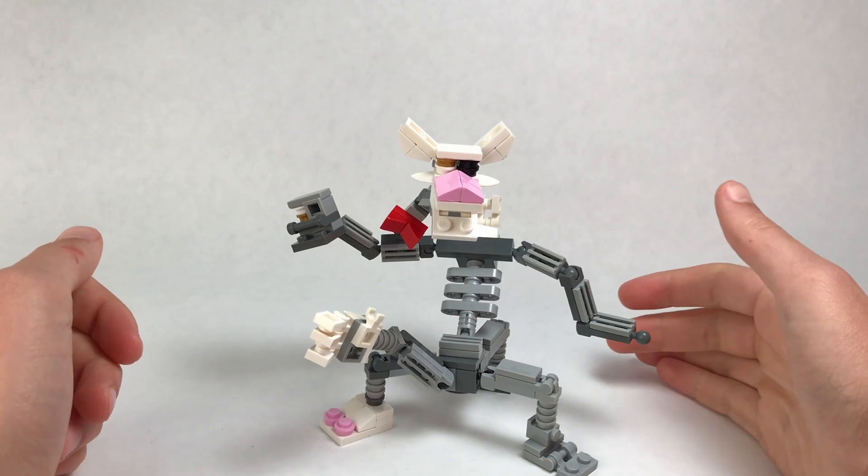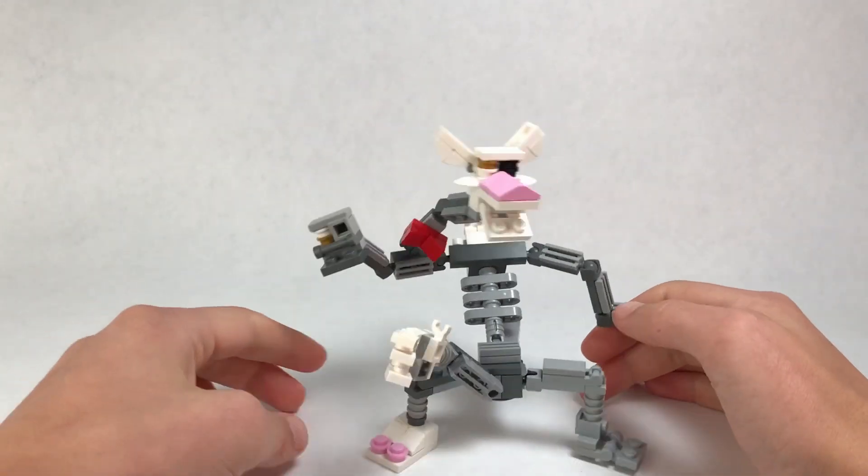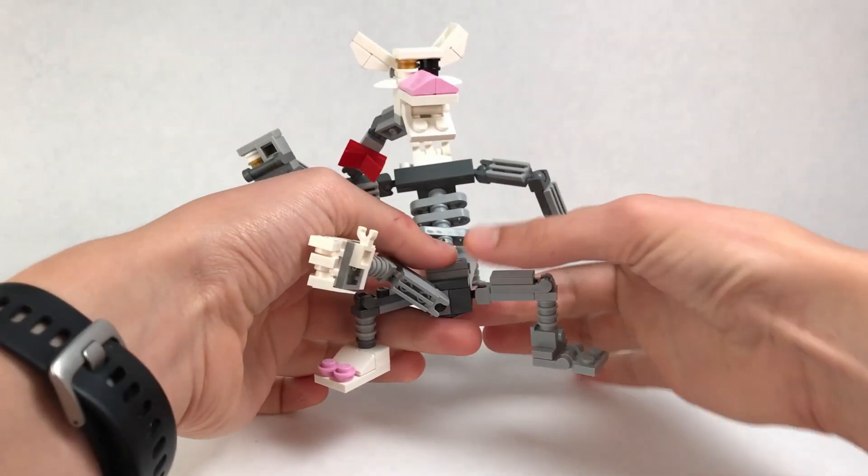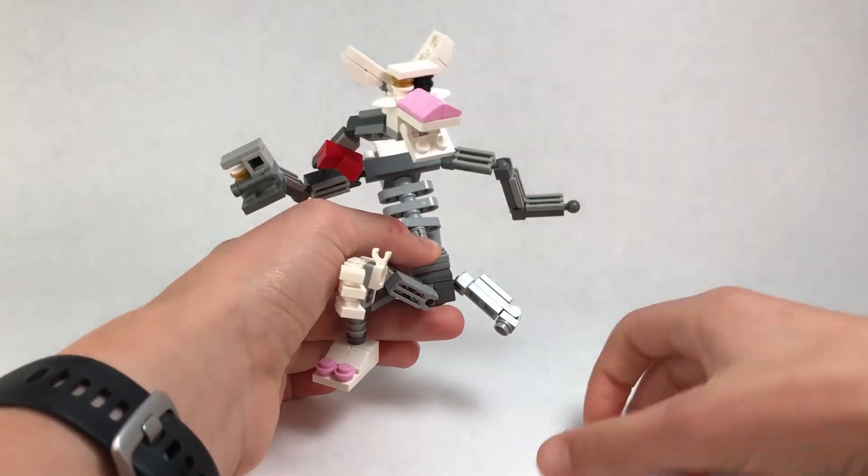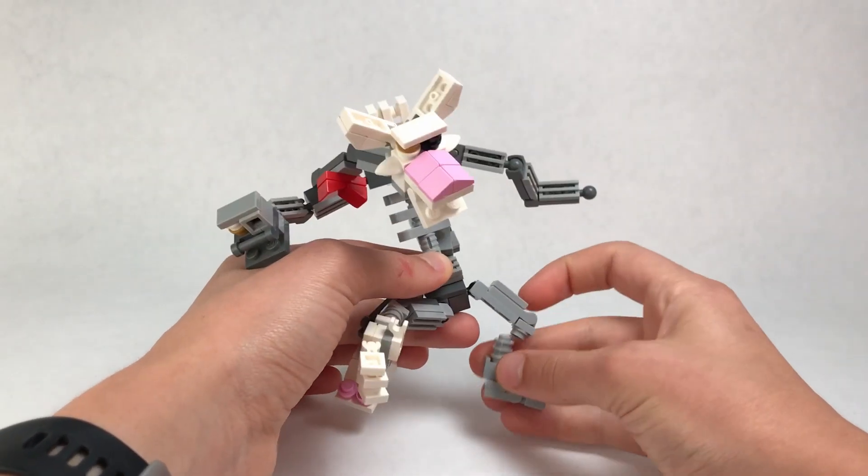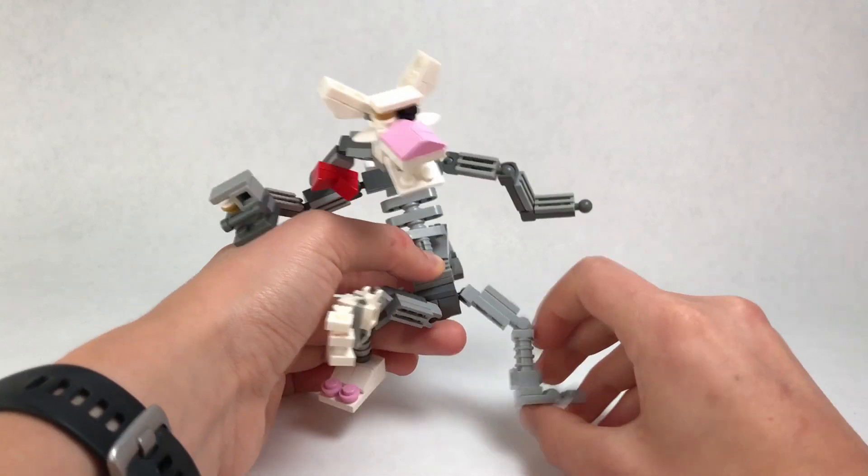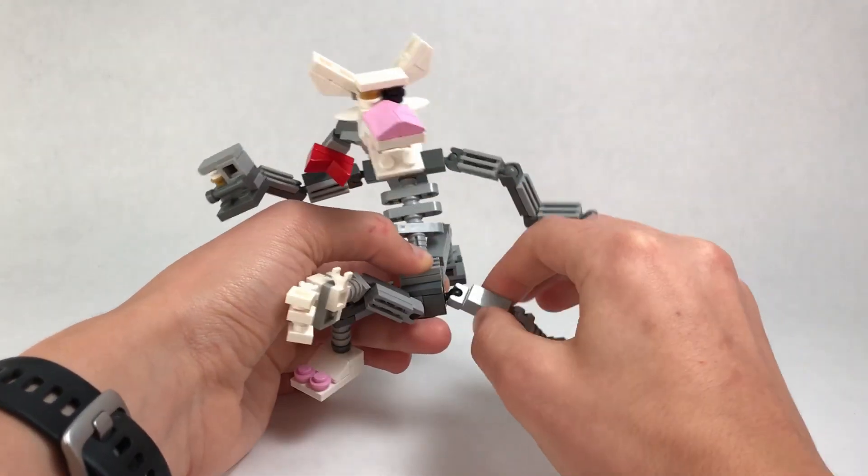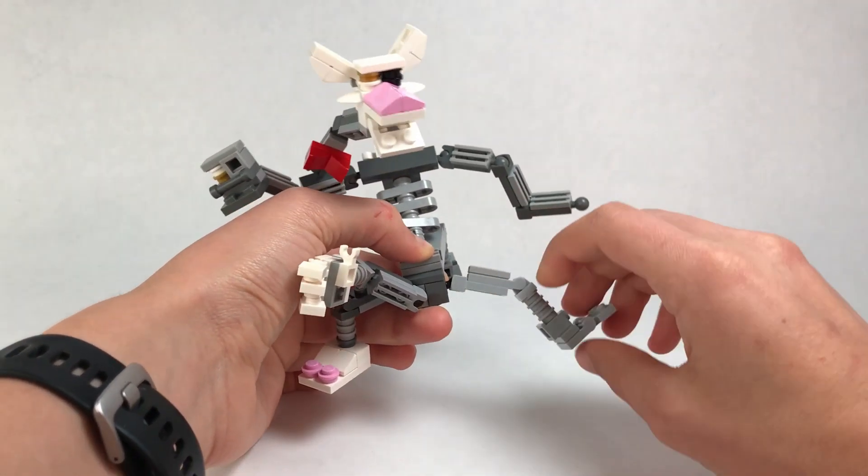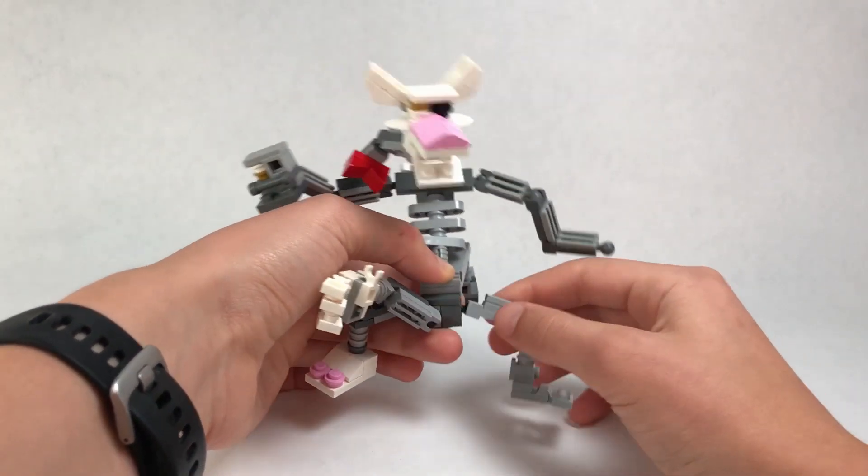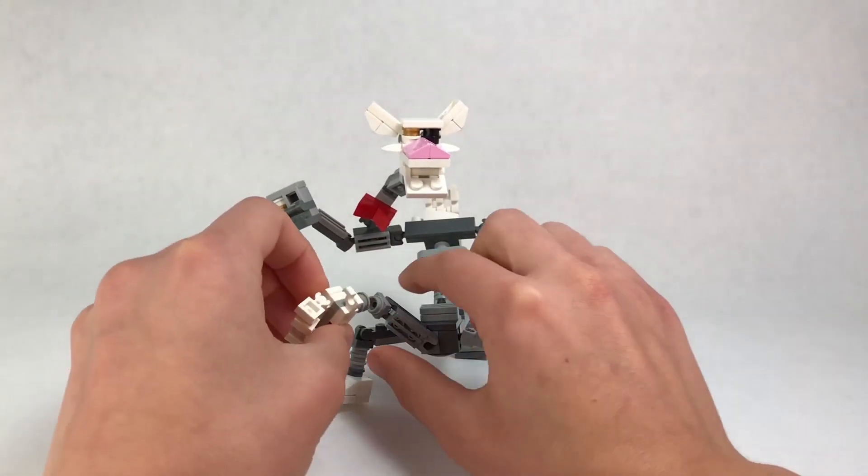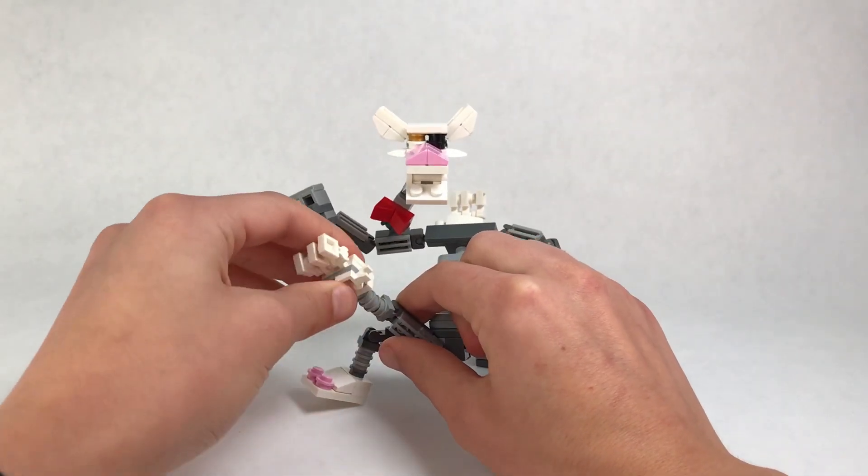But yeah, not too much to talk about. There's a lot of articulation since it's basically just ball joints and hinges. You basically got a ball joint on every leg. And then you got a hinge here and you can also rotate the foot. And that's pretty much the same for every leg here. And then same for this arm.